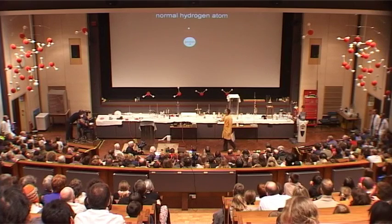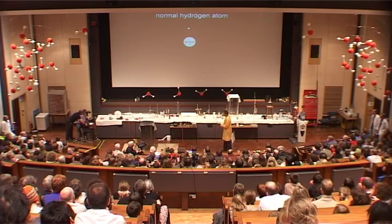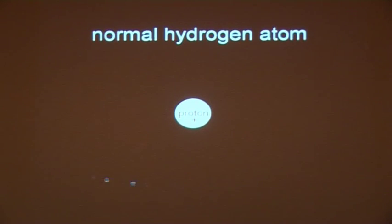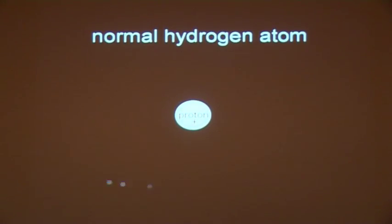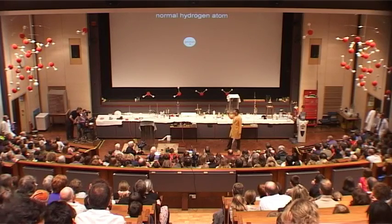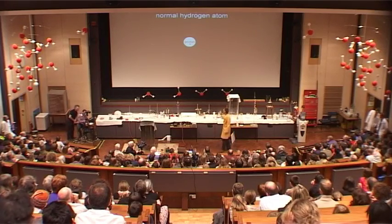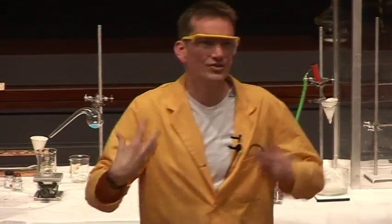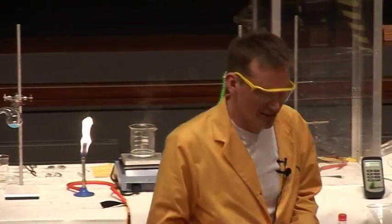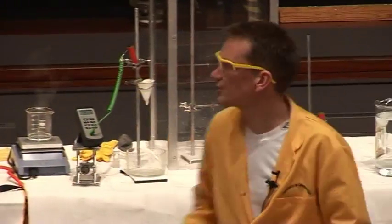There's an electron that whizzes round — this is whizzing round all over the place, and this is negatively charged. Then in the centre of the atom, in the nucleus, where all the weight of the hydrogen atom is, there's a proton. And that's what gives the hydrogen atom its weight.